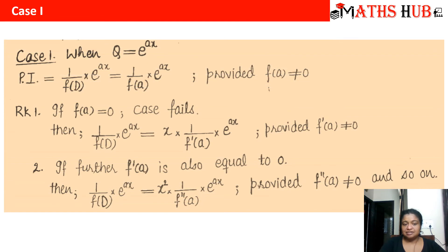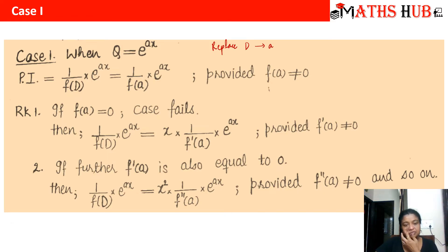Now let us move on to the first case. The first case is when on the right-hand side we have an exponential term e^(ax). The rule says: simply replace D by a. Compare the exponent of e^(ax) in the given question to find the value of a, and then in the particular integral just replace D with a. You will get the answer as (1/f(a))·e^(ax), provided f(a) is not zero.